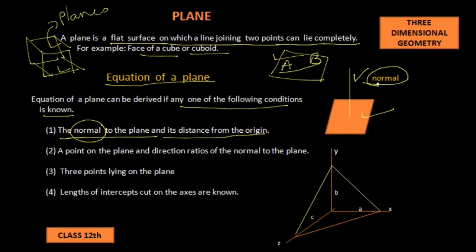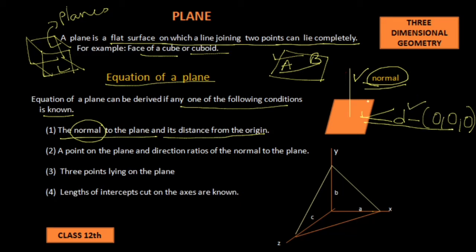So according to condition number one, if this normal to the plane is known and the distance of this plane from the origin — that is (0, 0, 0) — if the distance D of this plane from the origin is known, then we can find the equation of the plane.